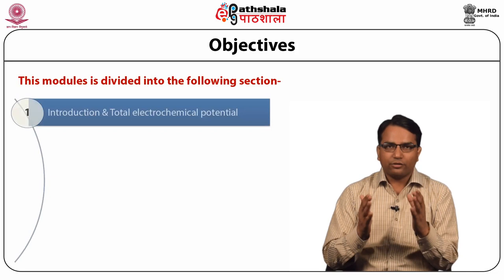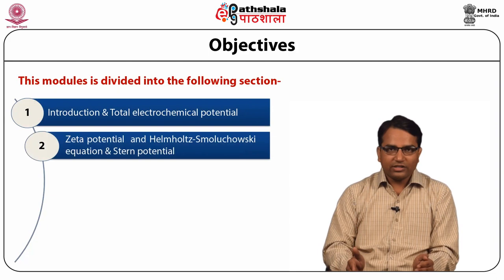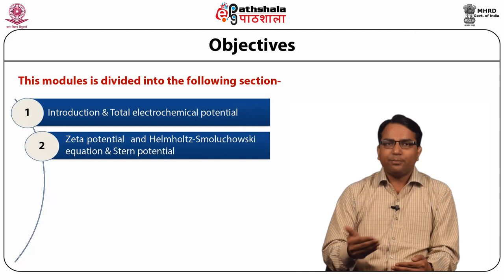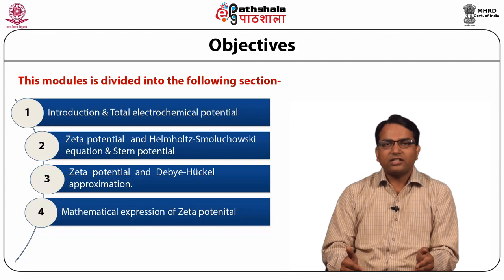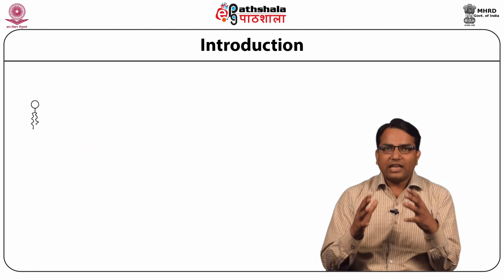First we will have an introduction, then we have total electrochemical gradient, then we have zeta potential and its Helmholtz equation, then we have streaming potential, then we will discuss the relation between zeta potential and Debye-Huckel approximation, then the mathematical expression of zeta potential, and finally the Stern modification of the diffuse double layer.